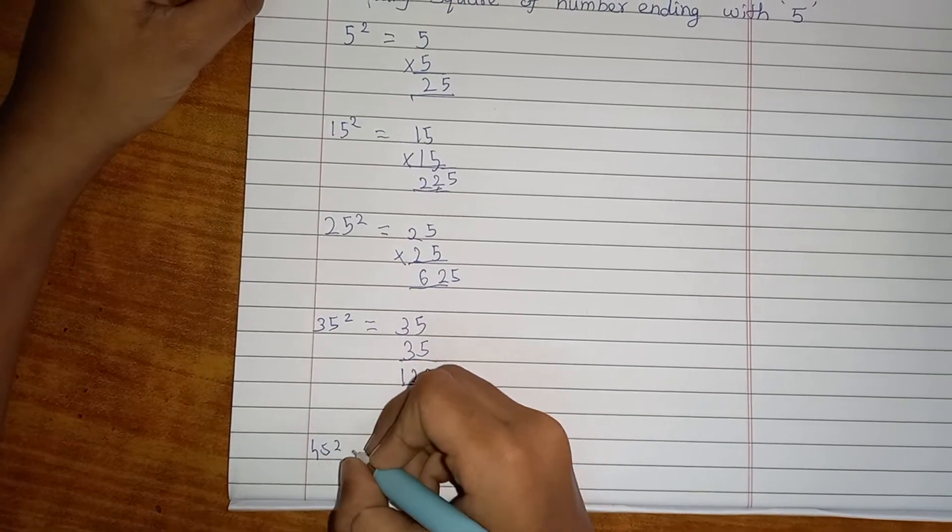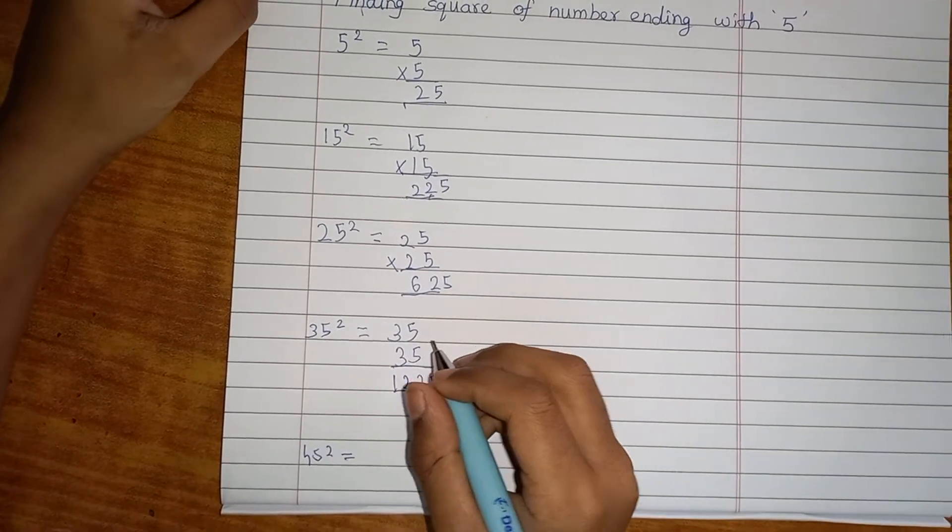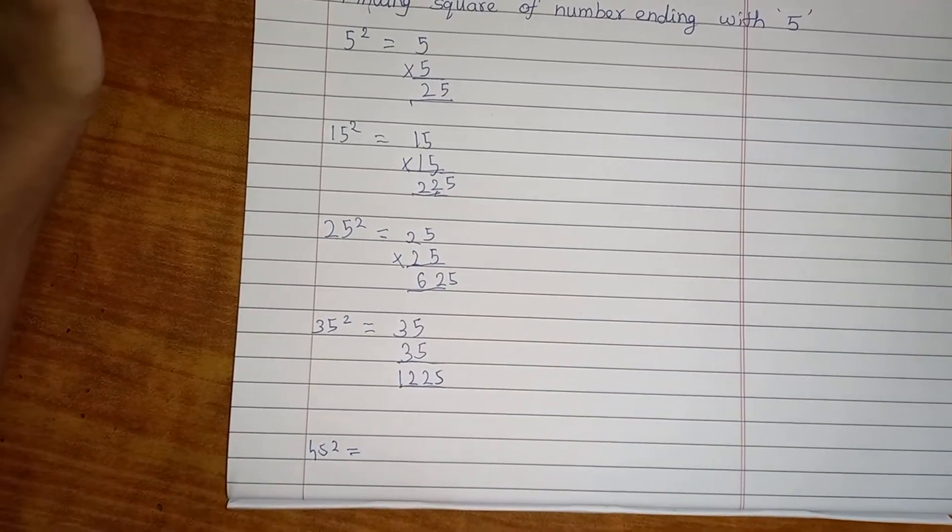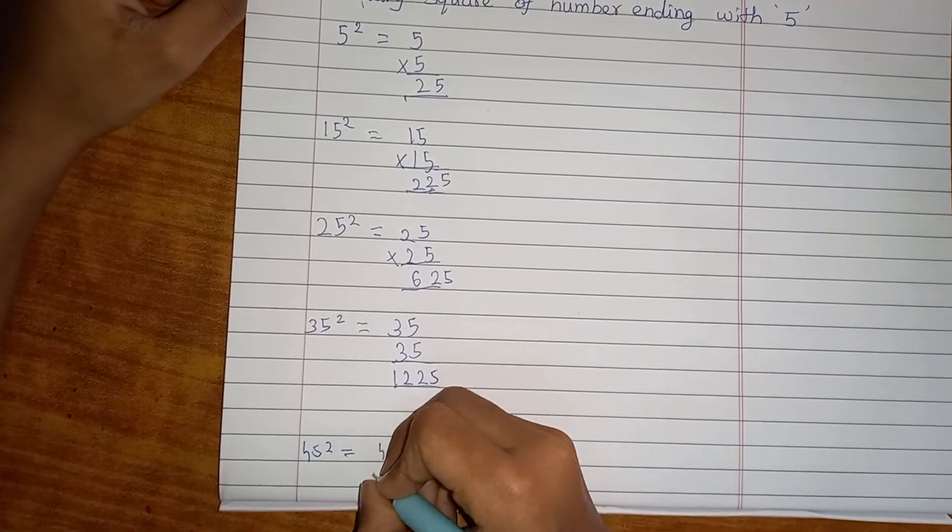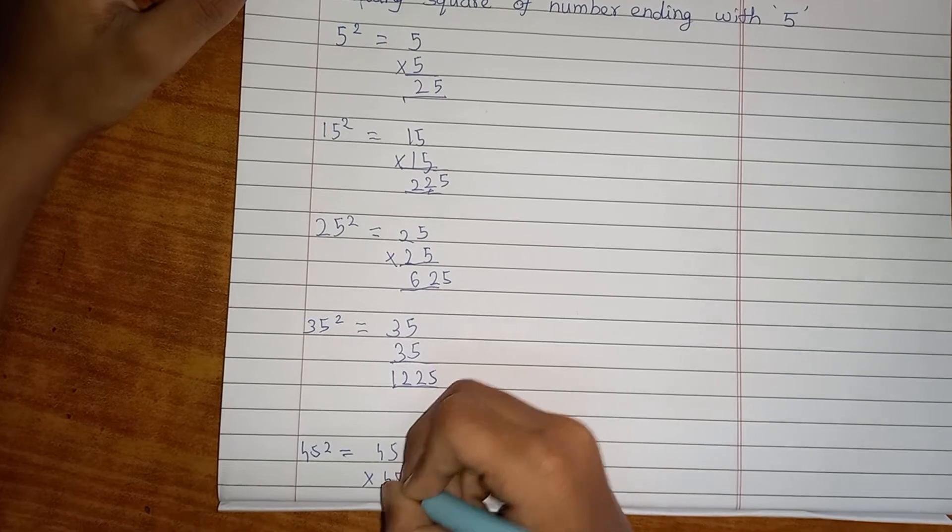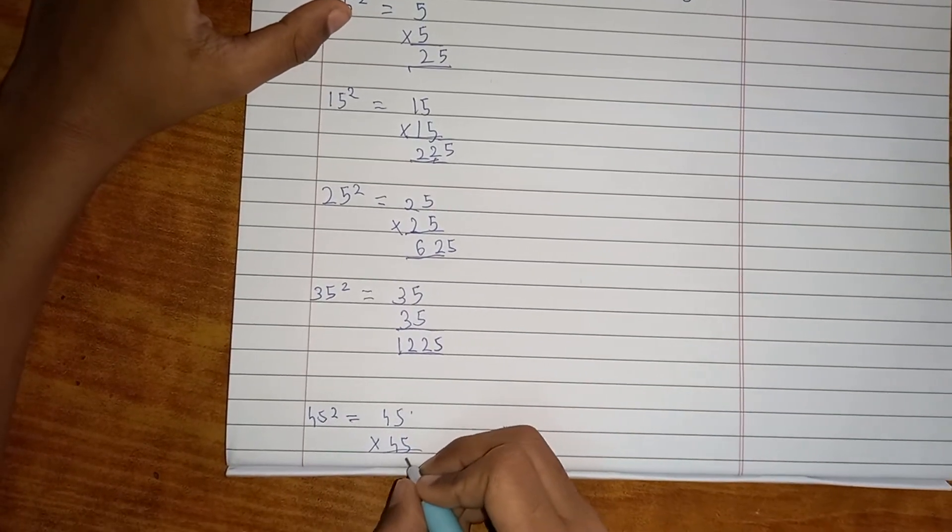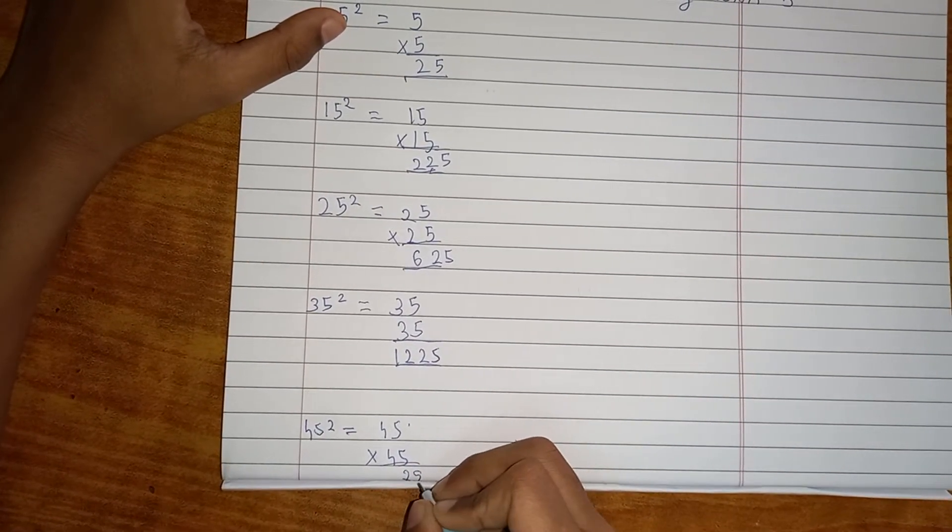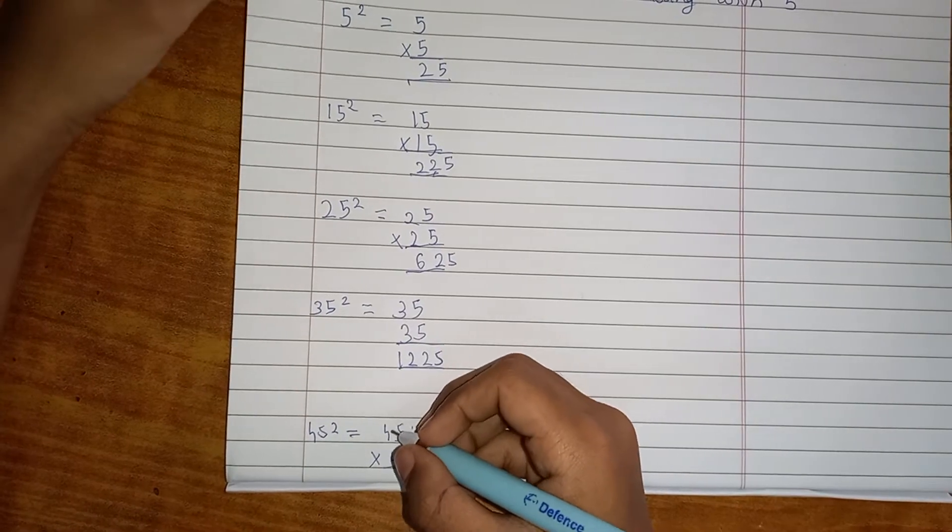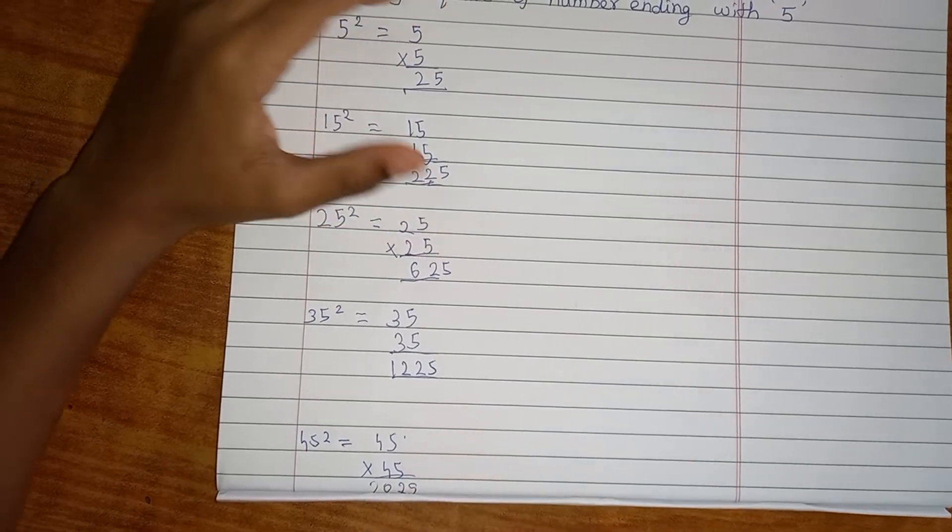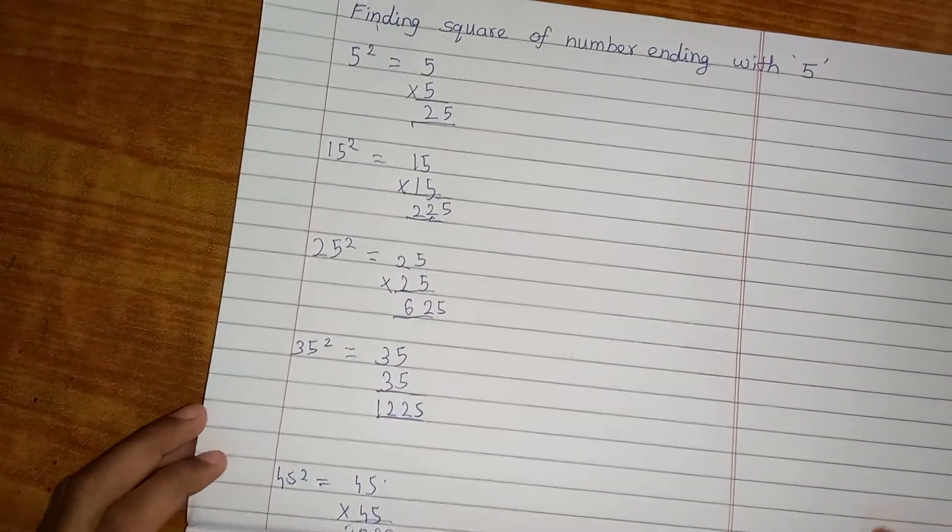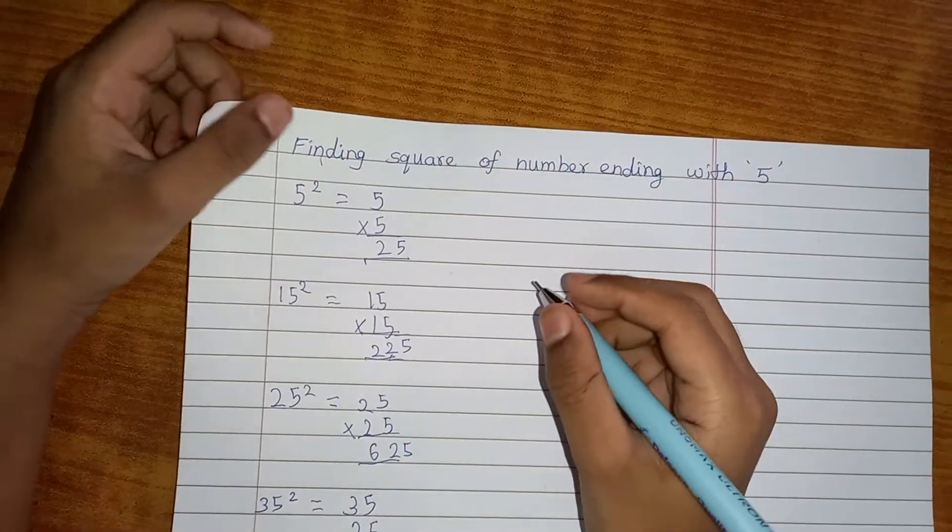45 square. Let me gonna do it. 45 multiplied by 45. And 25 aside. And 4 after 5. 4, 5 is 20. And it's 2025. How easy. Let's go with another one.